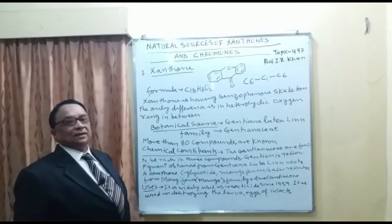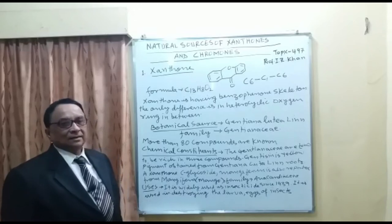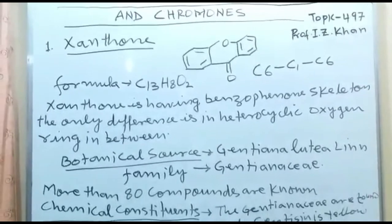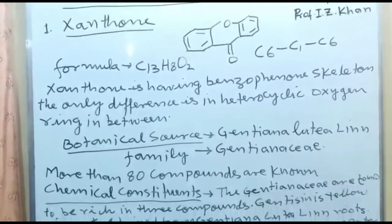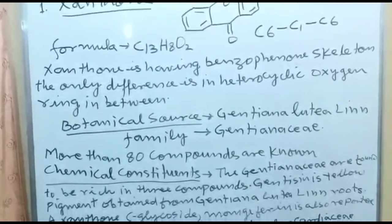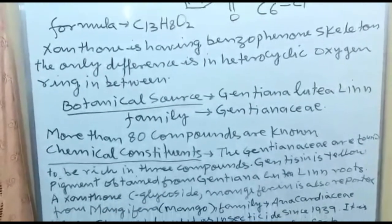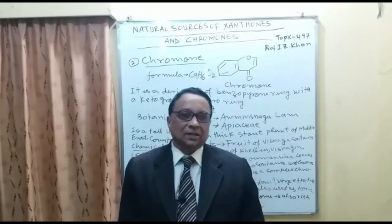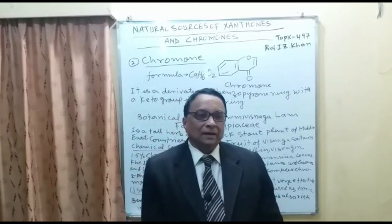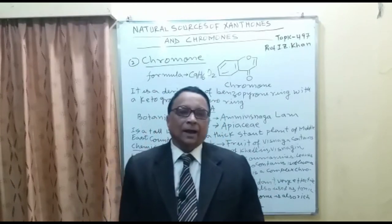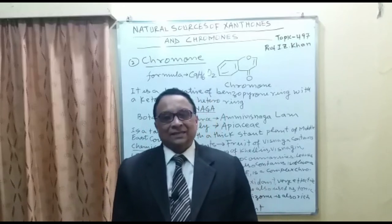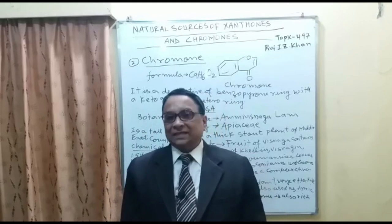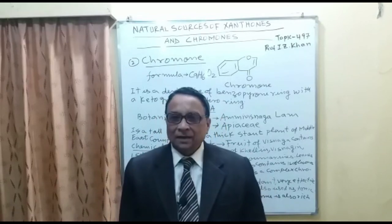Xanthone is used to destroy the larvae and eggs of insects. The next polyphenolic is chromone. Chromone is a polyphenolic and it contains two rings: one is an aromatic ring and the other one is an oxygen heterocyclic ring, which contains one keto group.